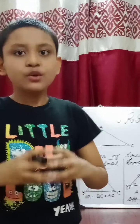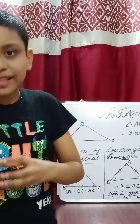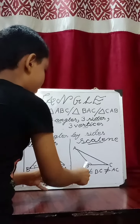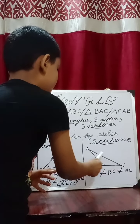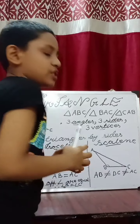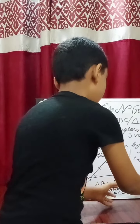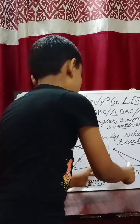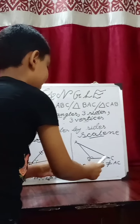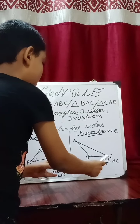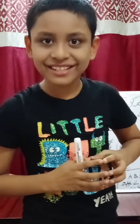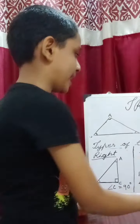Now let's move on to our last type of triangle by side, which is a scalene triangle. A scalene triangle is such a triangle which does not have any equal side. Here, AB is not equal to BC and it is also not equal to AC.